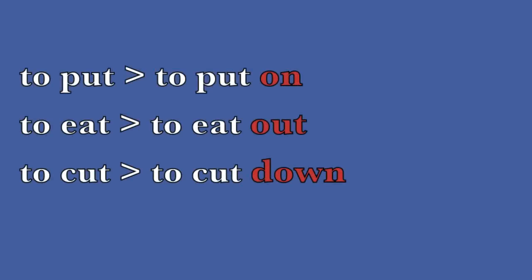Let's look at these examples. I'm sure you all know what put, eat, and cut mean. To put usually means to place or position. But the main meaning of put on is to clothe oneself with an item of clothing — for example, I put on my jacket. To eat and to eat out are admittedly similar, because in both cases the consumption of food is involved. But if you say eat out, you are not eating at someone's home; you are eating at a restaurant. To cut down means to strike and cause to fall — for example, I cut down my neighbour's tree. Cut down can also mean reduce.